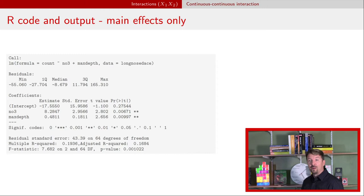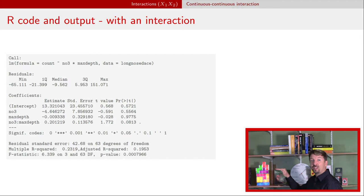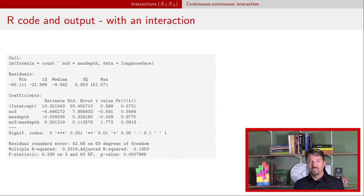Here's how to fit these models in R. For the main effects model, put a plus sign between the two explanatory variables; the results show three lines corresponding to beta-0, beta-1, and beta-2. For the interaction model, change that plus to an asterisk — the multiplication symbol — which creates the interaction between nitrate and max depth, and you'll see an additional line corresponding to the beta-3 coefficient. Note that the parameter estimates change between the two models.